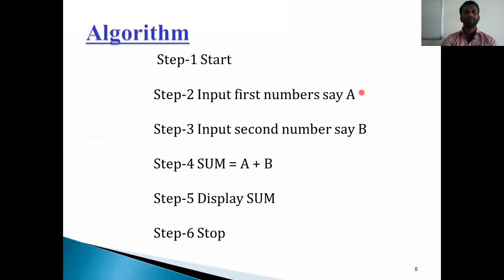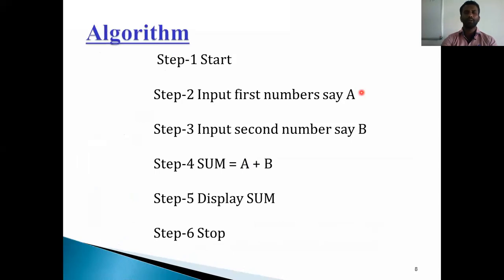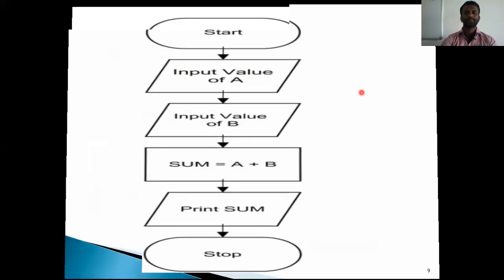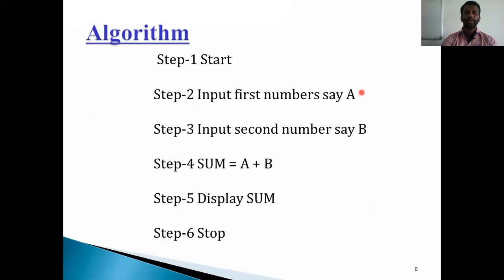Algorithm steps. First step: start. Second: input first number, say a. Third step: input second number, say b. Step four: sum equal to a plus b. Step five: display sum. Step six: stop.